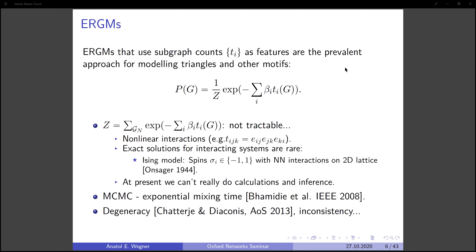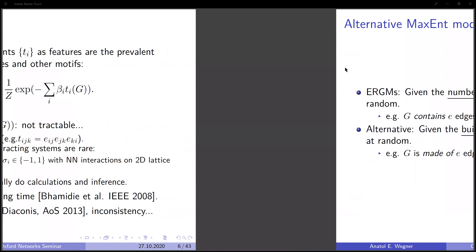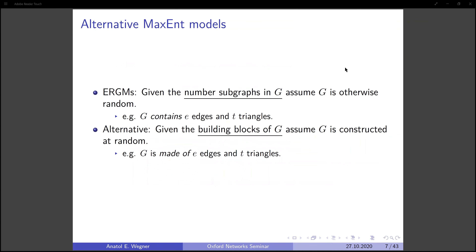Because these models aren't really tractable at present, we don't really know how to do calculations and inference using them. In practice, Markov chain Monte Carlo methods are used, but these are known to suffer from exponential mixing times. There are other problems related to degeneracy — these models produce almost the same graphs for large regions of the parameter space — and inconsistencies: if you fit a network to an exponential random graph and then generate from that model, the generated graph does not really look like the graph you started with.